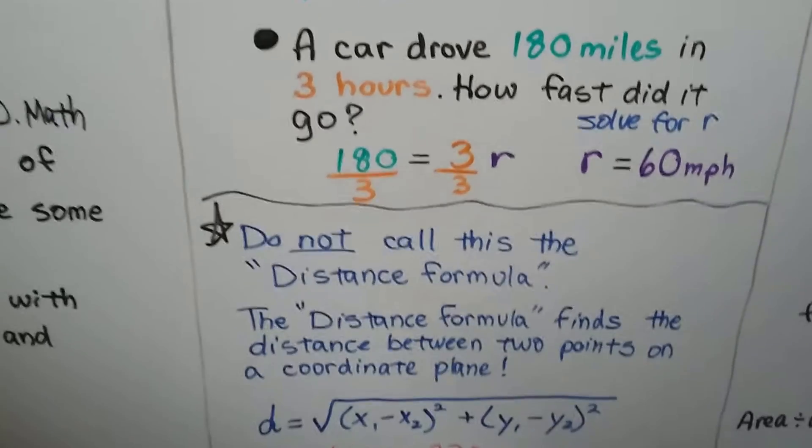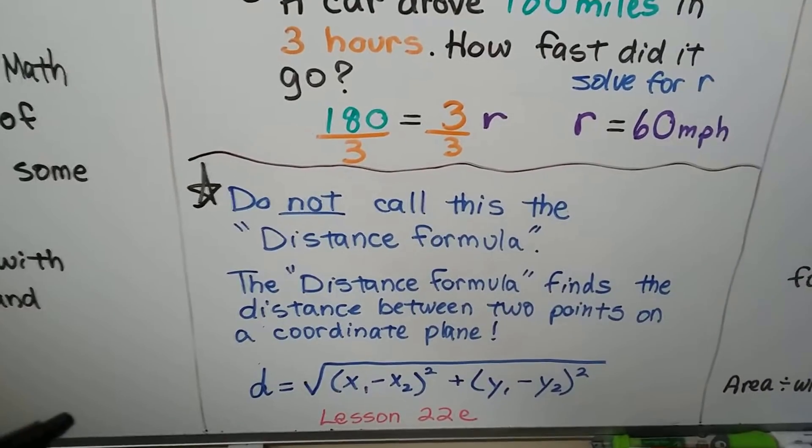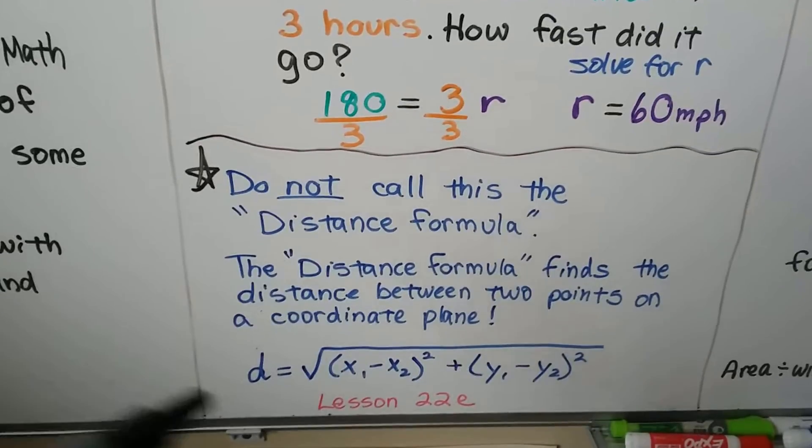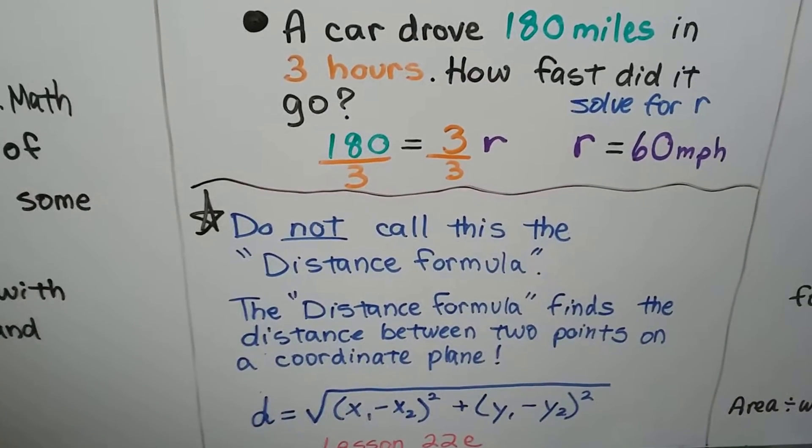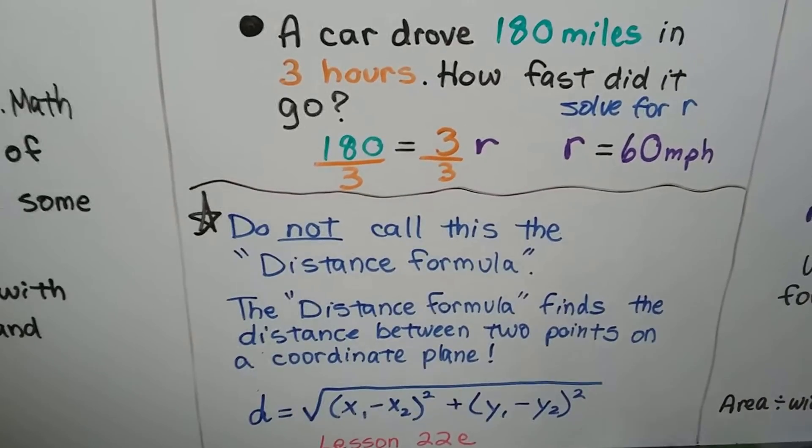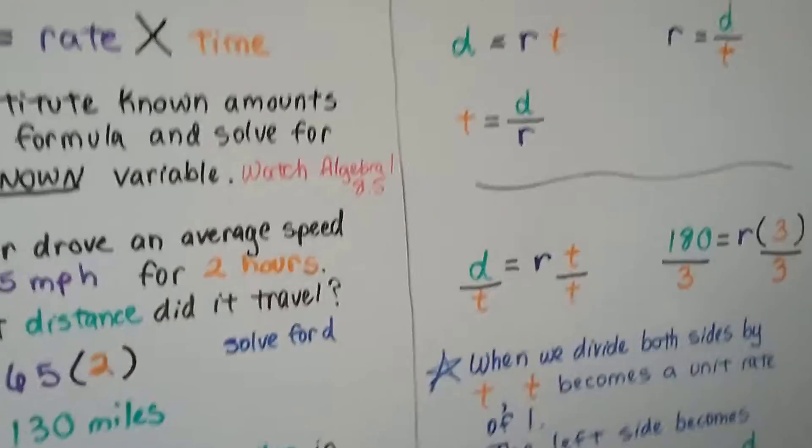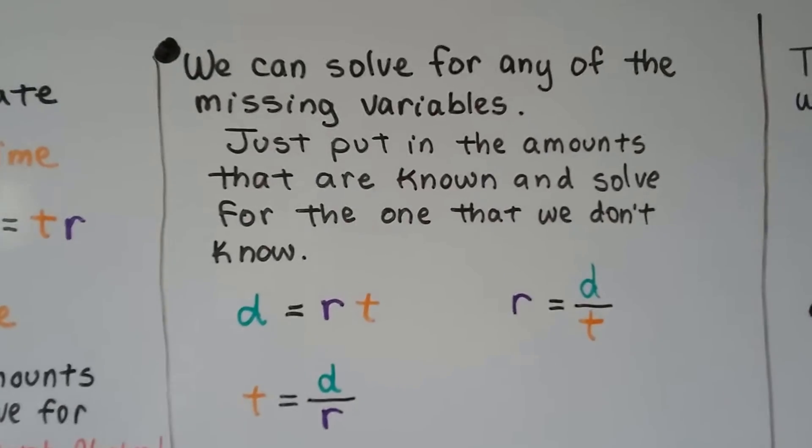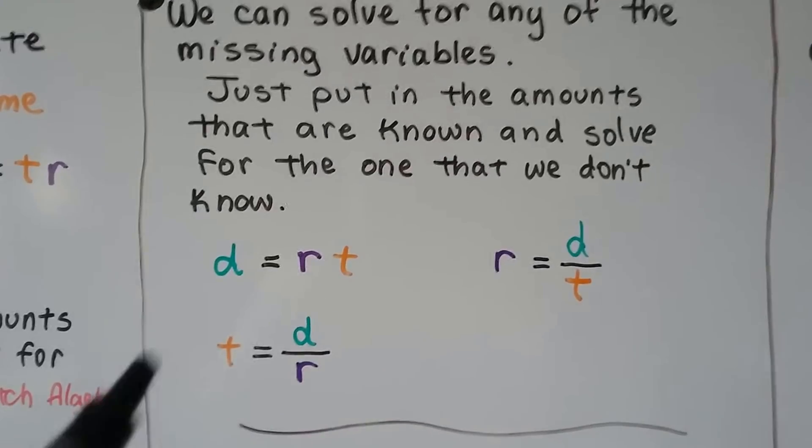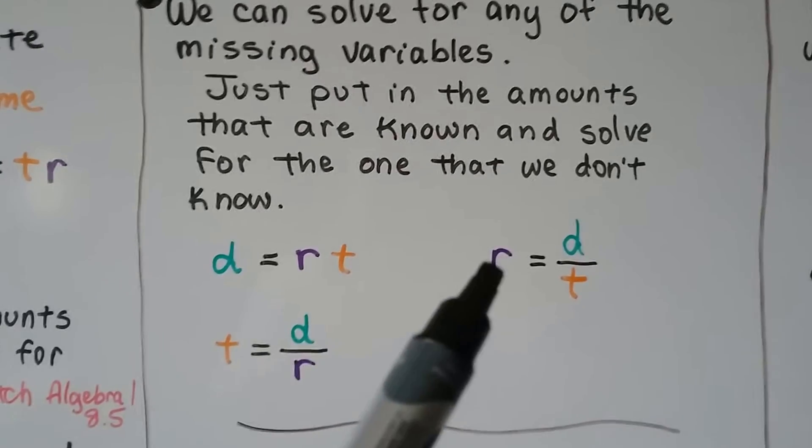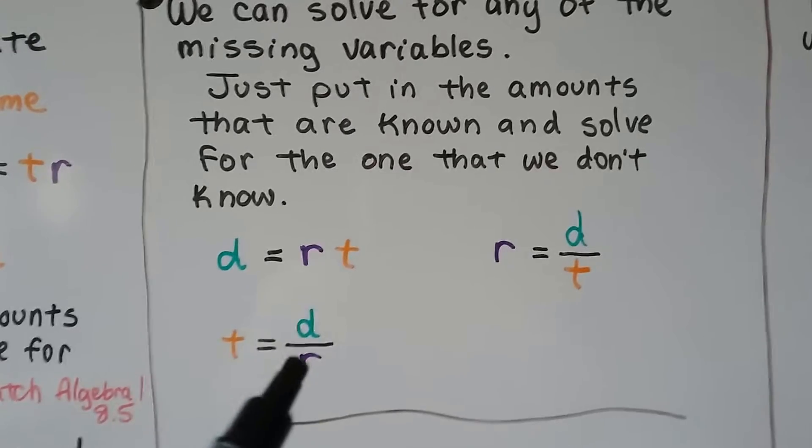Now, we don't call this the distance formula because the distance formula finds the distance between two points on a coordinate plane. And we'll get into that in lesson 22E, but for right now, just call this uniform rate or motion or distance rate time formula. You don't want to confuse it with the distance between two points. We can solve for any of the missing variables. We just put in the amounts that are known and solve for the one that we don't know. So, distance equals rate times time. We could also say rate equals distance divided by time, or time equals distance divided by rate.